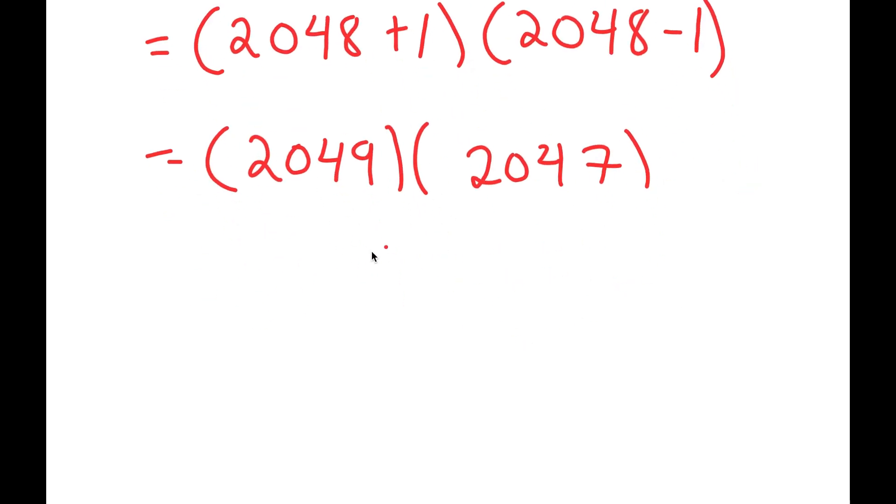And now, a simpler way of multiplying this rather than the usual method. This way, it takes way too long. A much easier route is to rewrite this as 2000 plus 49 times 2000 plus 47. From here, I can simply distribute.